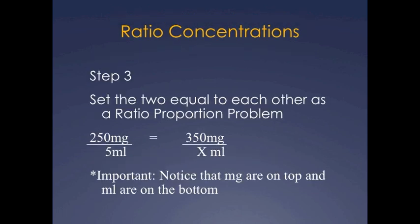Step three, set the two equal to each other as a ratio proportion problem. So on one side of the equation you're going to write 250 milligram over 5ml, equal sign. On the other side you're going to write 350 milligram over x ml. You will notice, and this is important, that the milligrams are on top on both sides of the equation and the ml's are on the bottom on both sides of the equation. If you were to do 5ml's on top and milligrams on the bottom, you would have to do the same thing on both sides of the equation, but for clarity, for our purposes, we are going to follow milligrams on top and ml's on bottom.